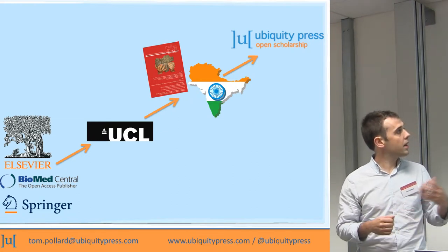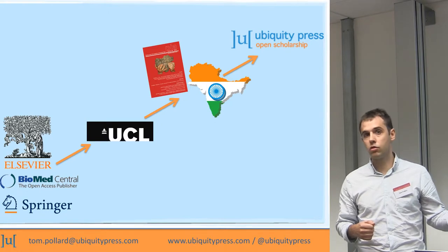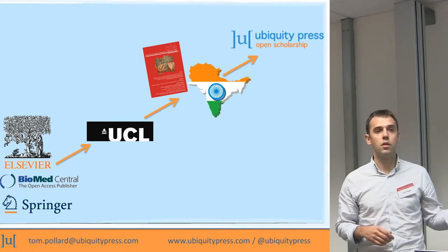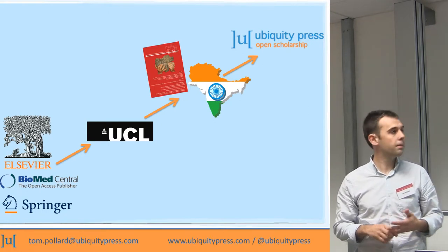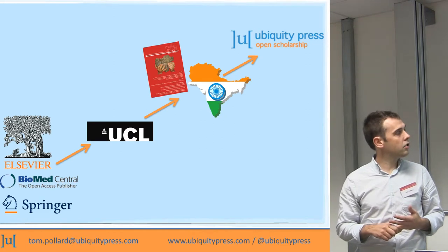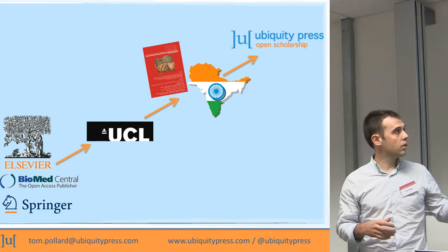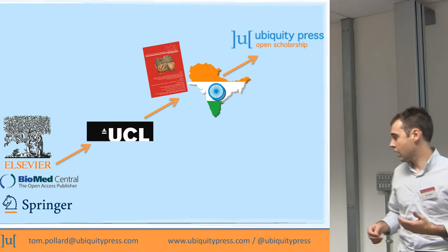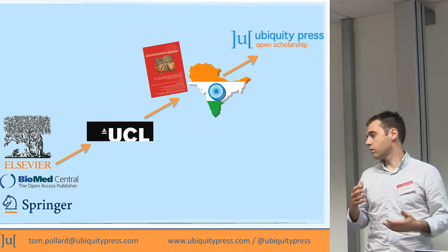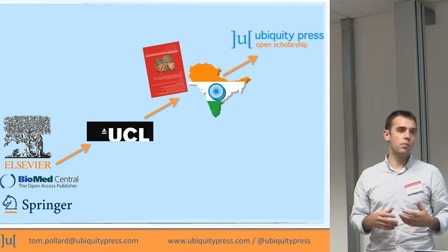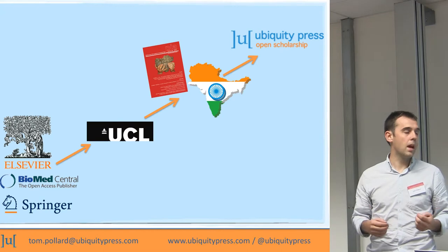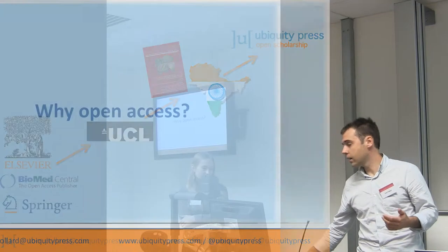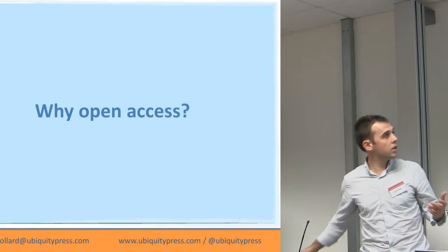We initially began publishing some journals through UCL — papers from the Institute of Archaeology — and then grew into Ubiquity Press. About a year ago we decided to expand from UCL, and that's what we'll be talking about today. So why did we choose Open Access?